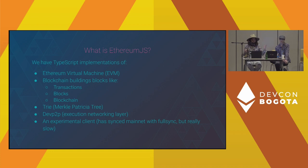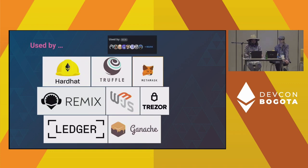We also have a TypeScript implementation of a Merkle Patricia tree, which is the data structure Ethereum uses, a devp2p package, and an experimental client. Someone was able to sync the client up to the tip of the chain on mainnet, though it's not performant enough for production. We don't have the mitigations in place that production-ready clients have. It's used by a bunch of well-known tooling: Hardhat, Truffle, MetaMask, Remix, web3.js, and others use us as a dependency.